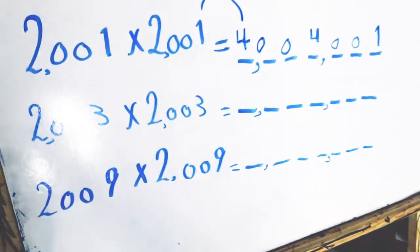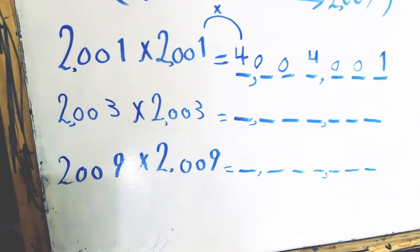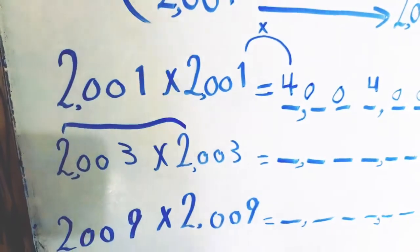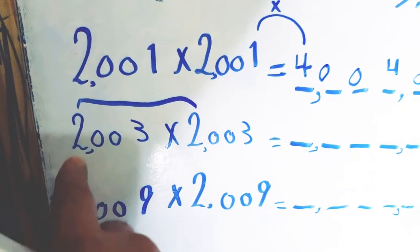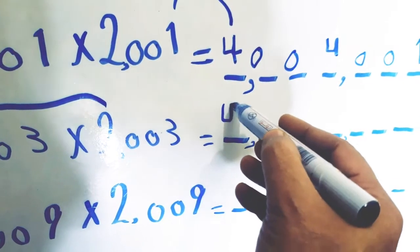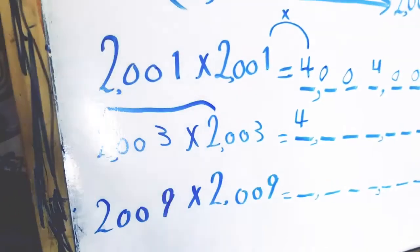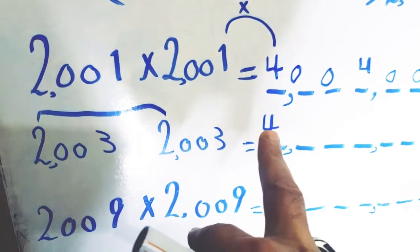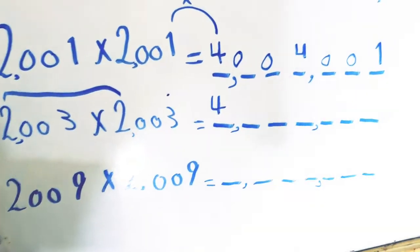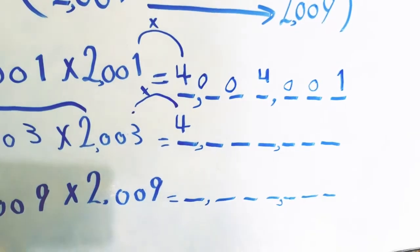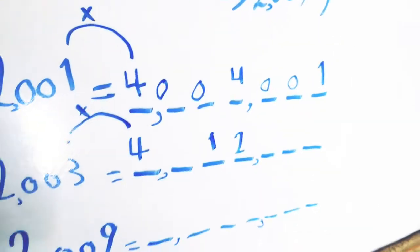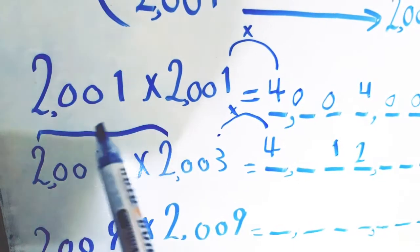Let's take another example: 2003 times 2003. The first step: we multiply the first digit by itself, so 2 times 2 equals 4. The second step: we multiply the product by the last digit. The last digit is 3, so we multiply 4 by 3. 4 times 3 equals 12.